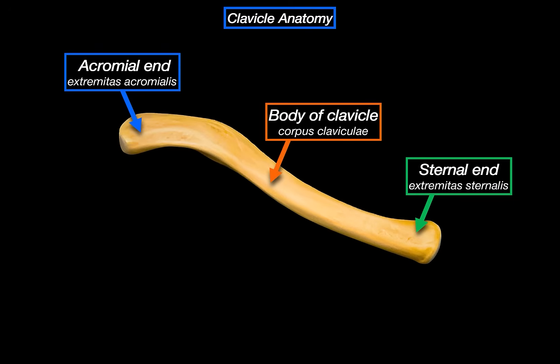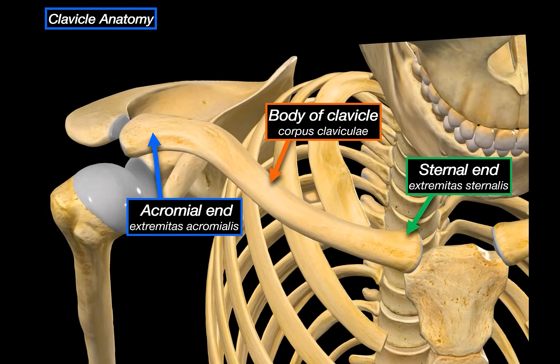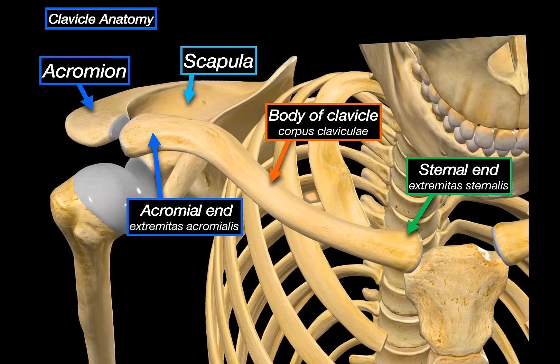Let's place this clavicle in the body. At the acromial end, we will see the scapula, and specifically the acromium of the scapula — this is where the clavicle articulates laterally. Then on the other side, we can see the sternal end and the sternum, that's where the clavicle articulates medially.